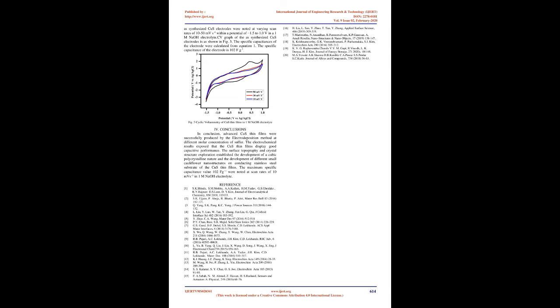D. Electrochemical Supercapacitive Properties: Afterwards the structural, surface morphological, and compositional study of the CuS films were confirmed, CV measurements were carried out to more examine the electrochemical supercapacitive properties. CV graph of the as-synthesized CuS electrodes were noted at varying scan rates of 10 to 50 mV/s within a potential of -1.5 to 1.0 V in a 1M NaOH electrolyte. CV graph of the as-synthesized CuS electrodes is shown in Figure 5. The specific capacitances of the electrode were calculated from equation 1. The specific capacitance of the electrode is 102 F/g.